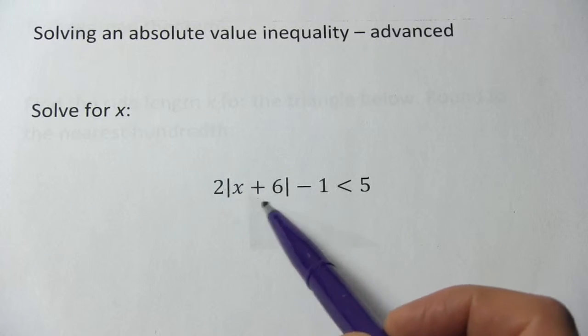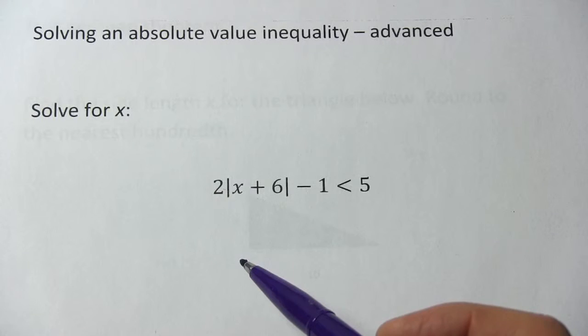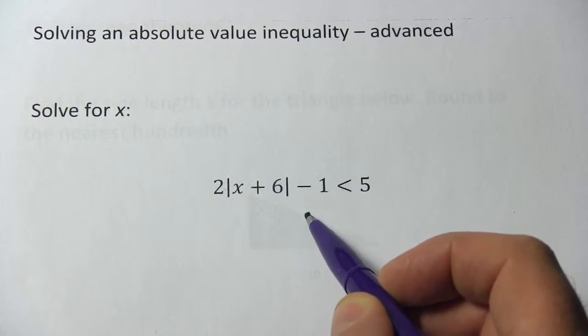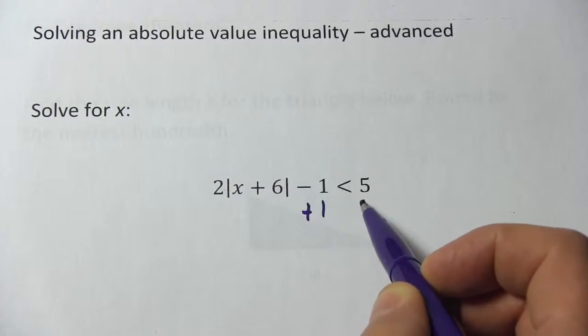First of all, we want to get the absolute value portion alone on one side. I think I'm going to start by getting rid of this negative 1, so we'll add 1 to both sides.